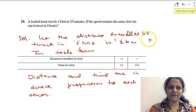Now, let the distance travelled by truck in 5 hours be X km. In table form, I can write it: distance travelled in km is 14 and time is 25 minutes. If the distance travelled in km is X,